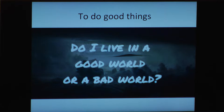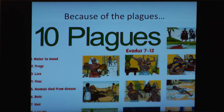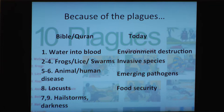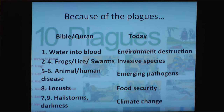Secondly, we want to do good things, not bad things. I thought I'd go biblical: there are the ten plagues from Exodus. Today we have environmental destruction, invasive species, emerging pathogens, problems with food security, and climate change — and all of these have potential biological solutions that GP-Write could be an integral part of.